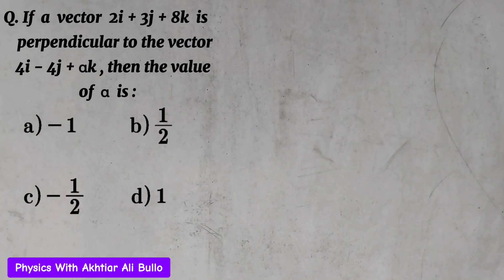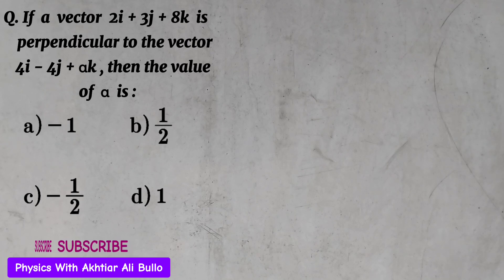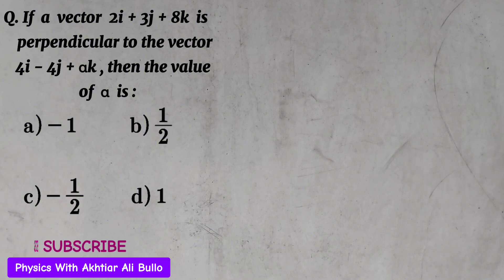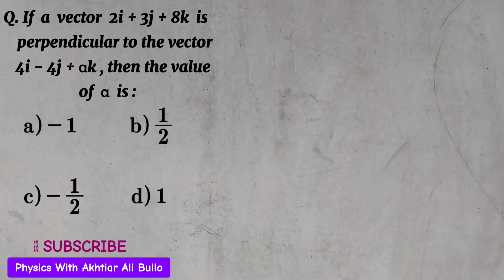The question is: if a vector 2i plus 3j plus 8k is perpendicular to the vector 4i minus 4j plus alpha k, then the value of alpha is: a) minus 1, b) 1 upon 2, c) minus 1 upon 2, d) 1. Let vector a equal 2i plus 3j plus 8k and vector b equal 4i minus 4j plus alpha k.